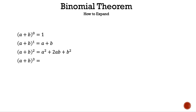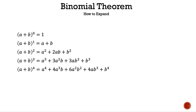Let's move on to the quantity of a plus b raised to the power of 3. Using the binomial theorem, the expansion is a cubed plus 3ab squared plus b cubed. Let's move on to the quantity of a plus b raised to the power of 4. Using the binomial theorem, the expansion is a to the fourth power plus 4ab cubed plus 6a squared b squared plus 4ab cubed plus b to the fourth power.